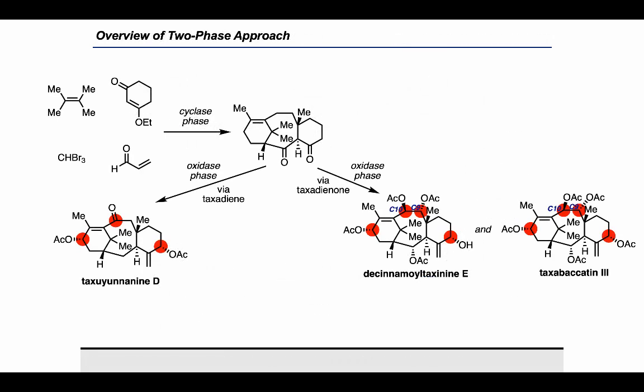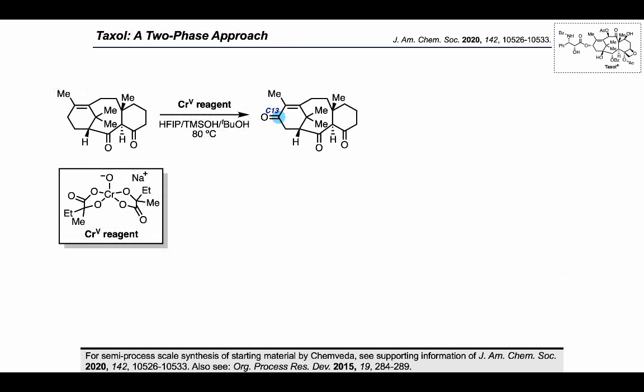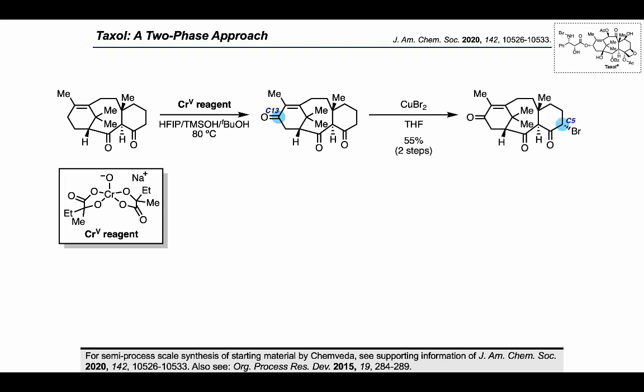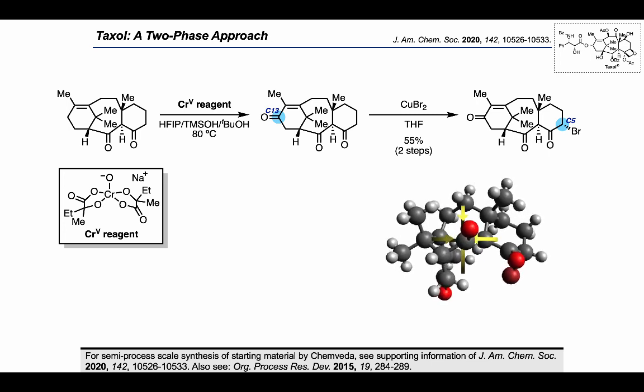Zooming out, at this point the Baran group had established a strategy for accessing a cyclized intermediate from simple precursors and shown it could be carried on through distinct reaction sequences using selective oxidations to reach taxaunanine D via taxadiene, or D-cinnamoyl taxanine E and taxibacadine 3 via taxadienone. The next aim became developing an oxidase phase to reach taxol, building on what had been learned in the previous syntheses. In their two-phase approach to taxol, the Baran group started from the diketone seen earlier as a precursor to taxadienone and taxadiene. They began with a C13 oxidation using the chromium(V) reagent from the last two syntheses, then used copper(II) bromide to install a bromine at C5 — the product confirmed by X-ray crystallography, showing bromine installed on the bottom face of the eastern cyclohexanone.